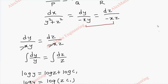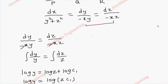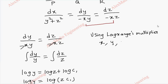So here we are going to use the multiplier. Using Lagrange's multiplier, I am going to multiply the first term with x, then the second term with y, and the third term with z, because after multiplication it is possible to get zero for the denominator's terms when we take the summation.